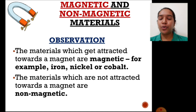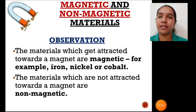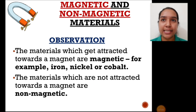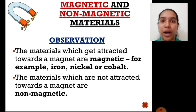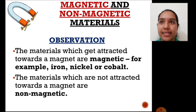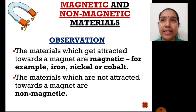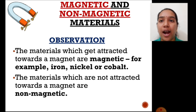So now you know the differentiation. Magnetic materials are those which get attracted to a magnet — the materials which get attracted towards the magnet are called magnetic materials, like the examples we observed just now. Iron, nickel, cobalt, steel, and brass are examples of magnetic materials.